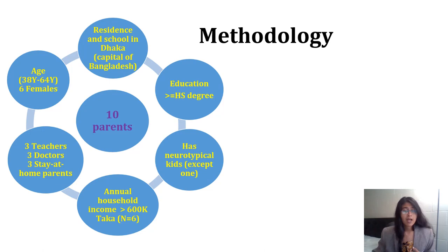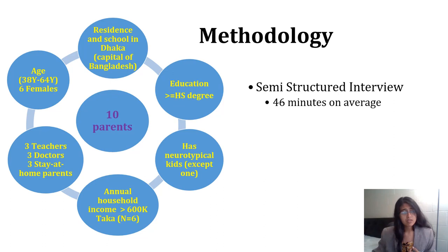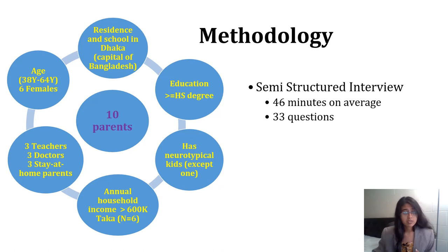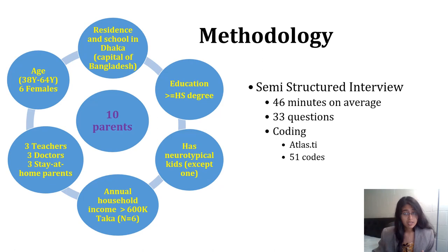Almost all of them had higher educational degrees, including one with a PhD. Except one, all of them had one neurotypical child each. Based on the demographics, we conducted semi-structured interviews lasting four to six minutes on average, with 33 questions. We asked about their opinions on the teaching methods at school, what kind of information they receive about school activities and their child's development, how frequently they are informed, and how much they know about what and how teachers teach. Finally, we wanted to know what technologies they think can improve communication between them and the teachers. For post-interview analysis, we used qualitative coding via Atlas TI, reducing transcriptions to 51 codes to get high-level themes that constituted the major findings.